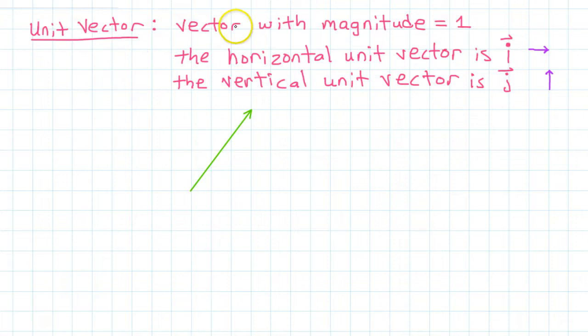A unit vector is a vector with magnitude equal to 1. The horizontal unit vector is called vector i. This is an image of the vector i, unit vector i. The vertical unit vector is called vector j. And here's a little unit vector j.